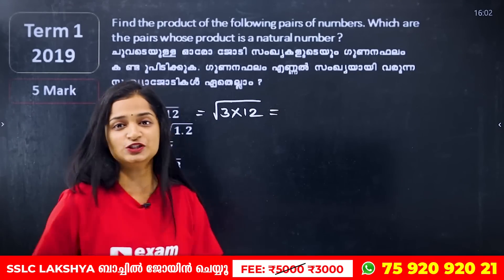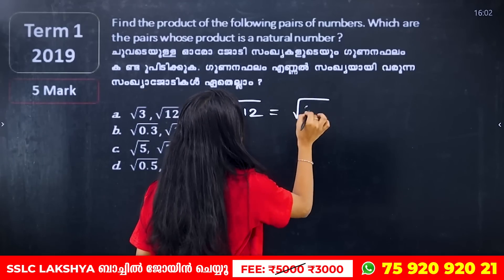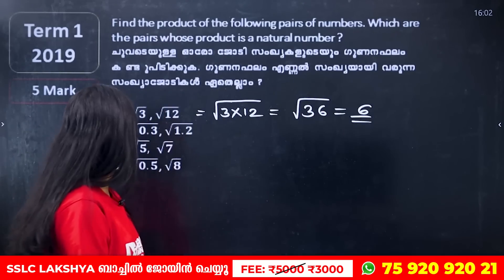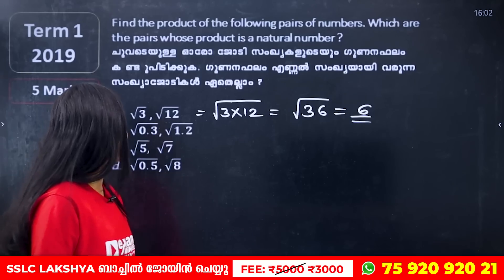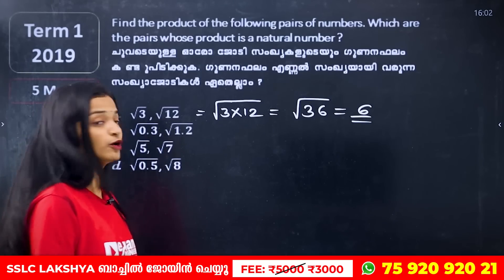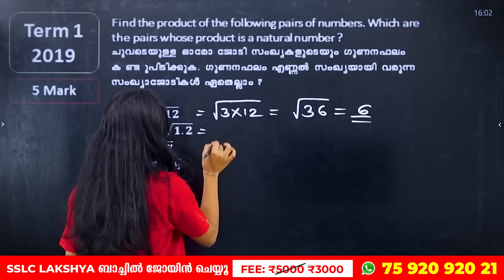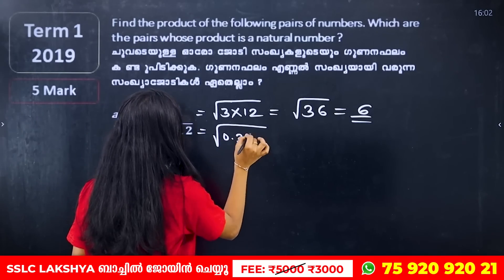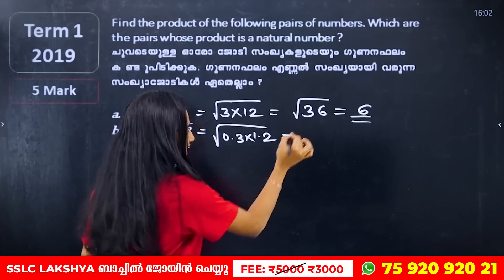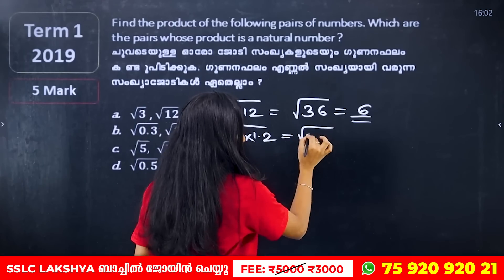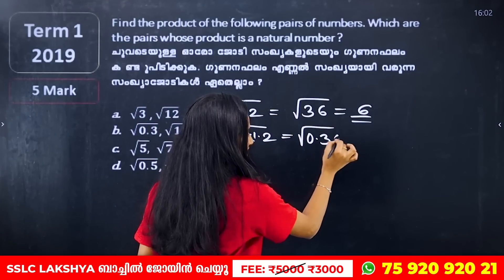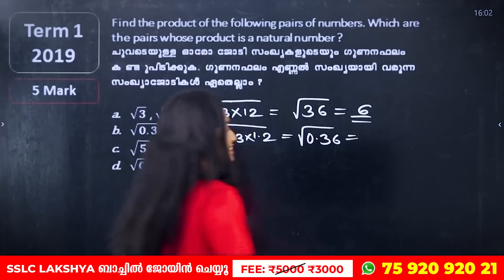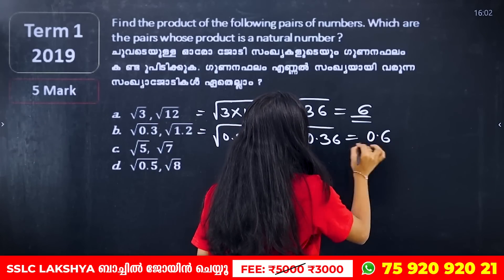The root of 3 into root of 12 is root of 36. Now, root of 0.3 into root of 1.2 — that is the root of 0.3 into 1.2. The answer is 0.6.